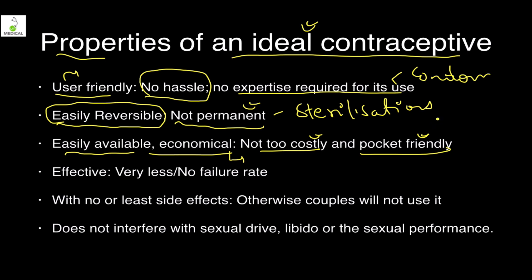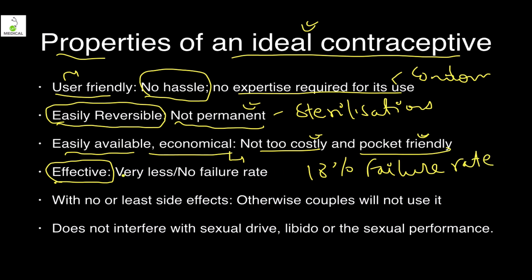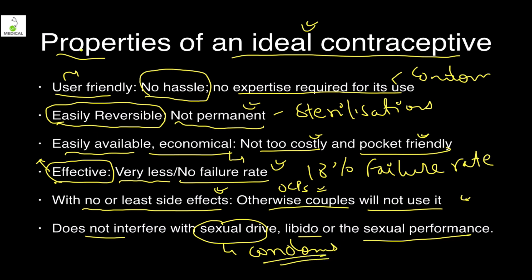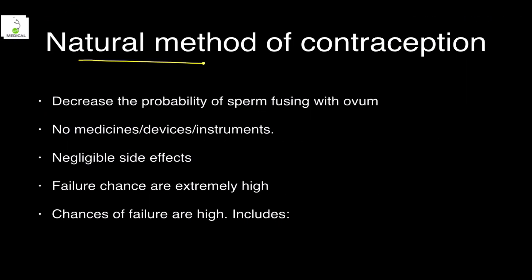Fourth, it should be effective — condoms have an 18% failure rate with typical use, which is very high, whereas implantable methods and sterilization are highly effective. Fifth, it should have no or least side effects, as OCPs have many side effects. Sixth, it should not interfere with sexual drive, libido, or sexual performance — some people complain that condoms affect sexual pleasure.